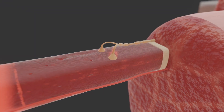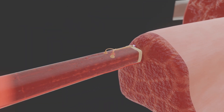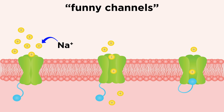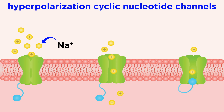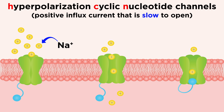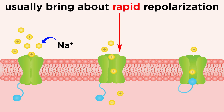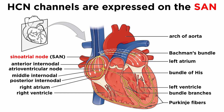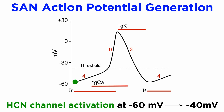This activates voltage-gated sodium channels such that sodium ions enter the SAN cells down their electrochemical gradient. These sodium channels are strangely known as funny channels, also known as hyperpolarization cyclic nucleotide channels, or HCN channels, due to their atypical function of being a positive intracellular influx current that is slow to open. Usually inward depolarization currents are fast and bring about rapid repolarization, which is critical for normal action potential generation in the nervous system. These HCN channels are primarily expressed on the SAN and are thought to be the main current that dictates normal cardiac rhythmicity.